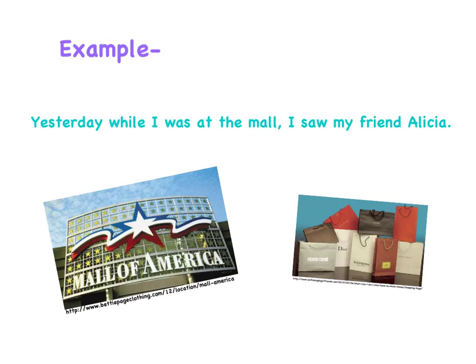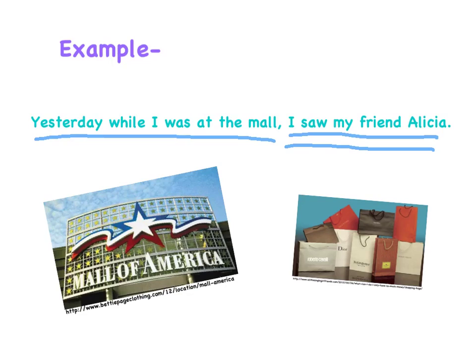Here is an original example that shows a periodic sentence: 'Yesterday, while I was at the mall, I saw my friend Alicia.' 'Yesterday, while I was at the mall' is a supporting clause. 'I saw my friend Alicia' is the independent clause. Since the independent clause comes at the end of the sentence, it creates a periodic sentence. You might remember a periodic sentence by the fact that the independent clause comes next to the period.